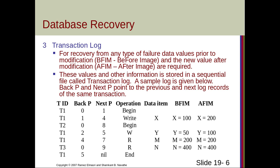BFIM means before image and AFIM stands for after image. These values are stored in a sequential transaction log file. The log structure includes: transaction ID, back pointer, next pointer, operation, data item, before image, and after image. Initially in transaction T1, back pointer equals 0 and next pointer equals 1, with the operation being 'begin transaction'; data item, BFIM, and AFIM are not applicable here.